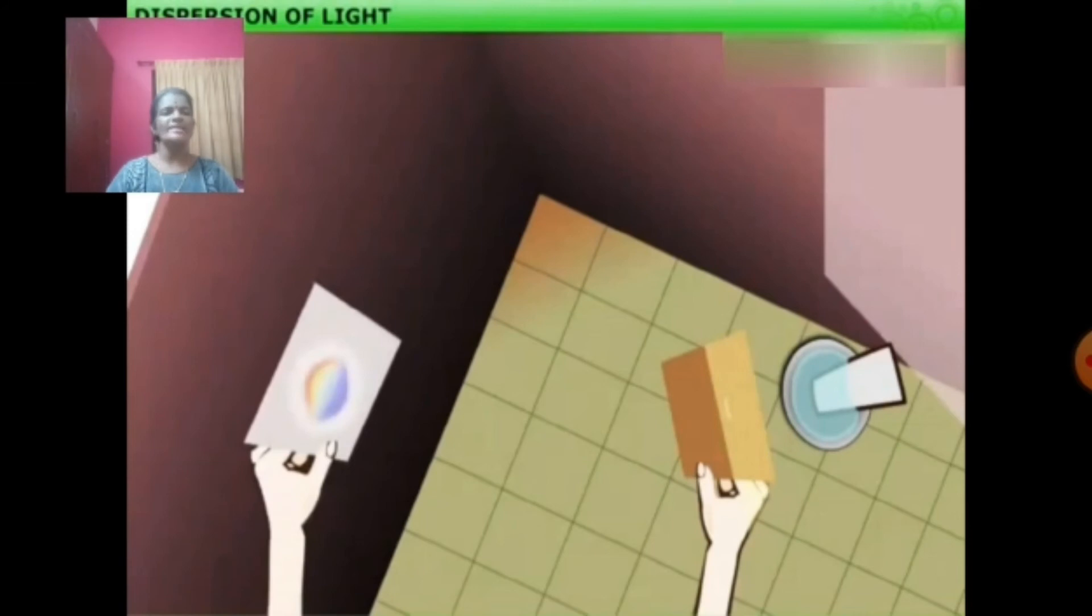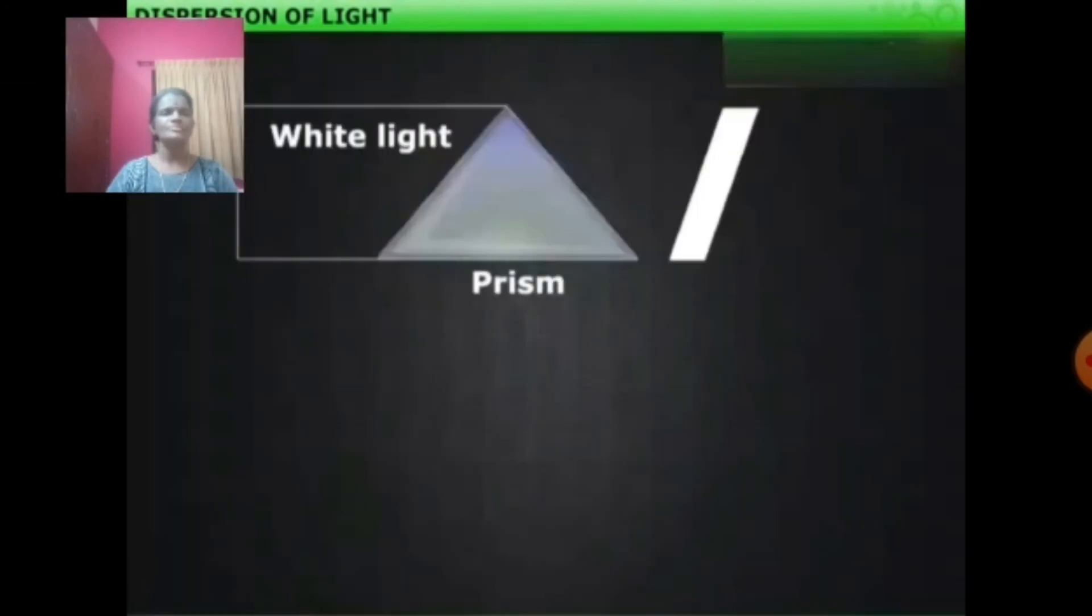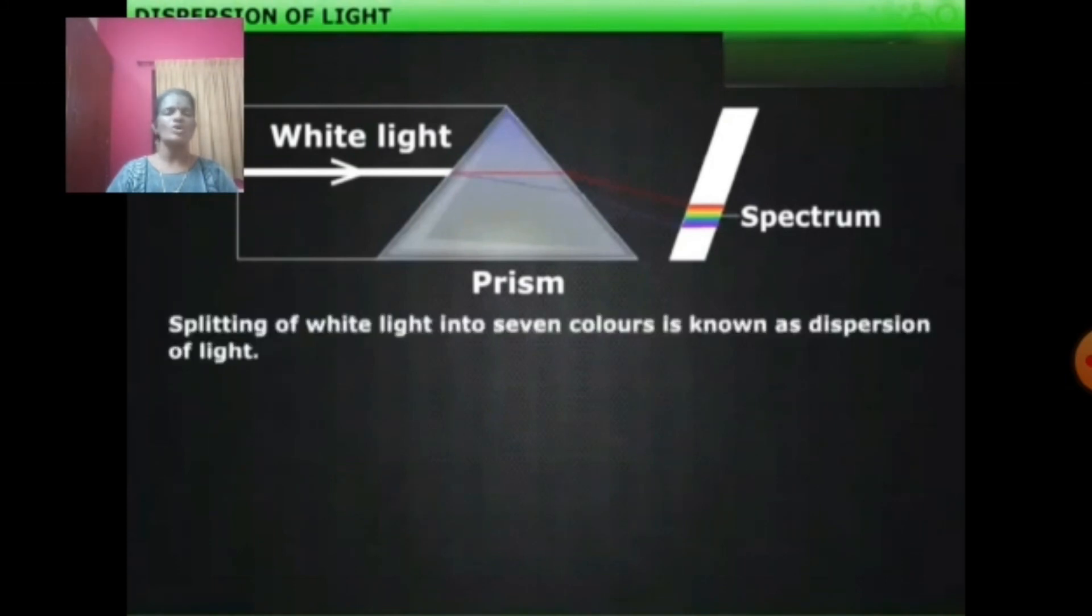Splitting of white light into its component colors is what is called dispersion of light. That is, if sunlight is allowed to pass through a prism, we can see that this sunlight consists of white light. It is split into its component colors and a spectrum is formed, and this phenomenon is called dispersion. Splitting of white light into 7 colors.